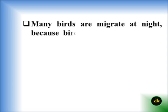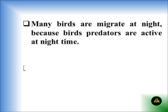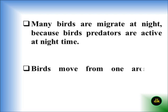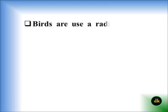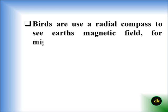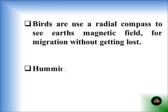Many birds migrate at night because their predators are active during the day. Birds move from one area to another in search of food and nesting locations. Birds use a radial compass to sense the Earth's magnetic field for navigation, helping them migrate without getting lost.